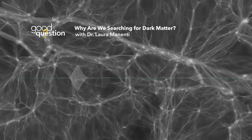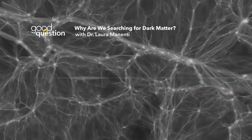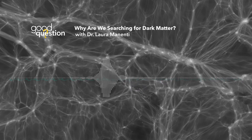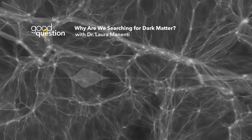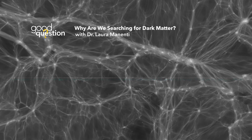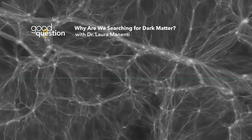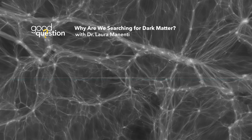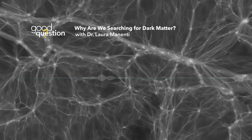What are some of the techniques in physics and astronomy used to find dark matter, and which have been more successful than others? How would you define success when comparing techniques that aim at tracing or finding dark matter? There are three techniques to find dark matter, which can be summarized as: you either break it, shake it, or make it.